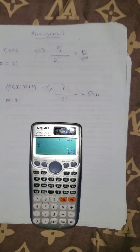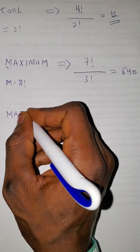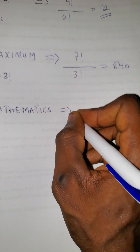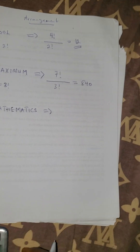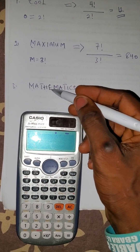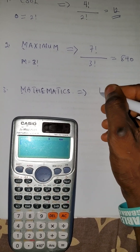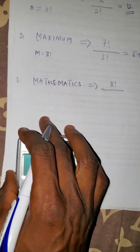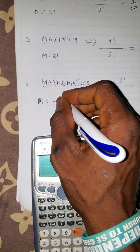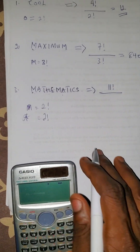I believe you are following. The third question: in how many ways can the word MATHEMATICS be arranged? The total letters in MATHEMATICS: one, two, three, four, five, six, seven, eight, nine, ten, eleven — so that's eleven factorial over the repeated letters. M appears two times, that's two factorial. A also appears two times, two factorial.